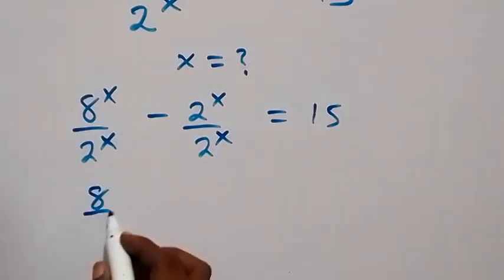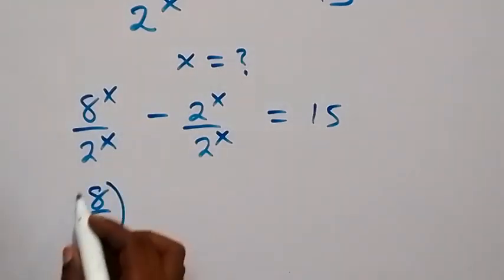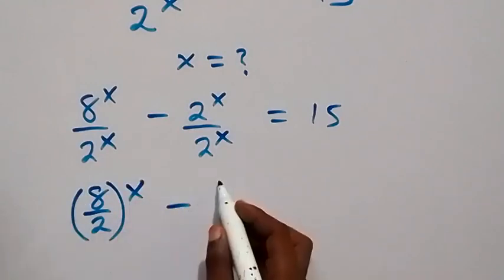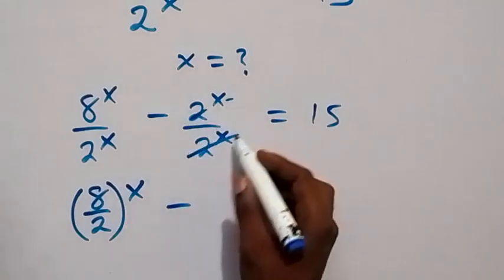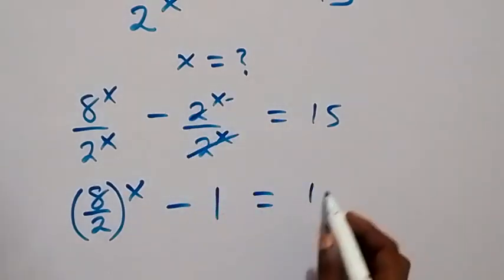Then (8/2)^x minus, and here as well when the terms cancel out, this becomes 1, which equals 15.